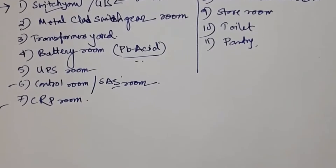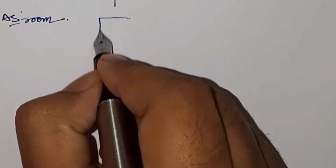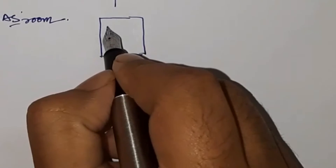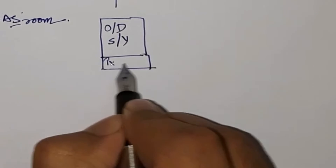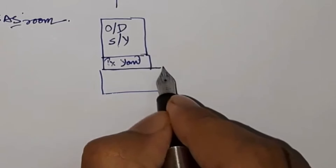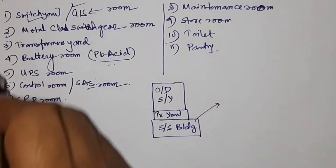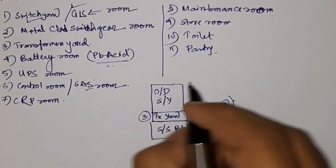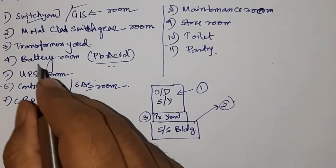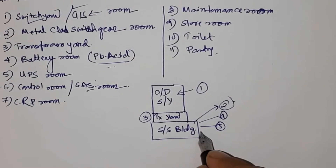Now if we try to draw an outline, let's consider a substation with a switchyard. Say this area is kept for the outdoor switchyard. Then here you can keep the transformer yard — all outdoor transformers go here. Then you consider a substation building. In this building you will have a switchgear room, transformer yard access, the switchyard area, and inside: battery room, UPS room, and control room.